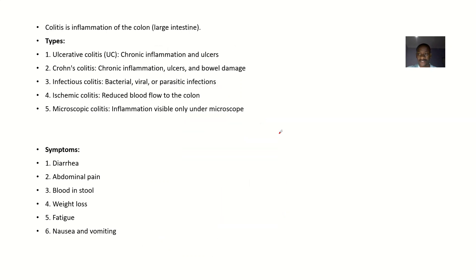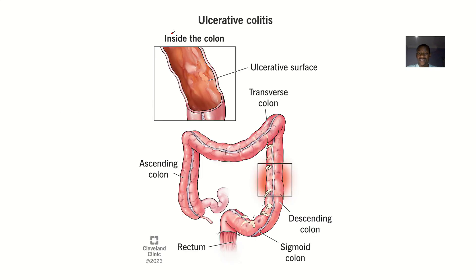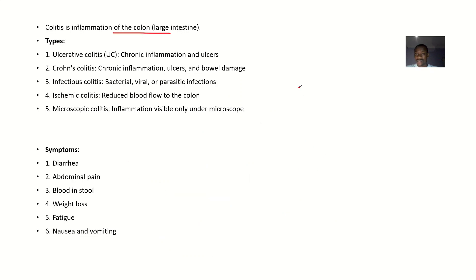For definition, colitis is simply inflammation of the colon. Where is the colon in the body? If you go back to your anatomy, you remember the ascending colon, transverse colon, and descending colon. Inflammation of any of these regions is what is known as colitis.